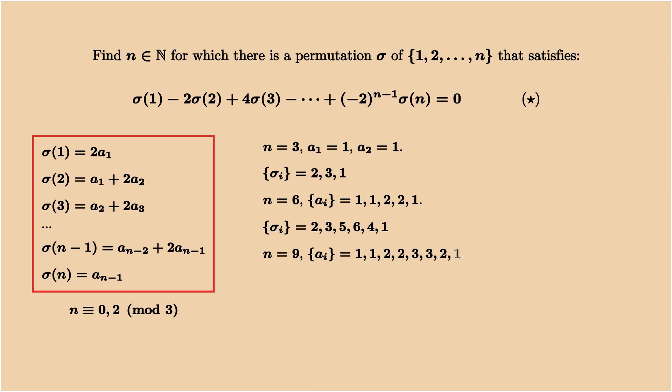When n is 9, we take the sequence a as 1, 1, 2, 2, 3, 3, 2, 1. And the sigma is 2, 3, 5, 6, 8, 9, 7, 4, 1.